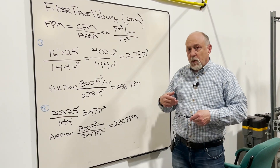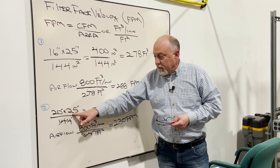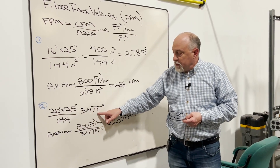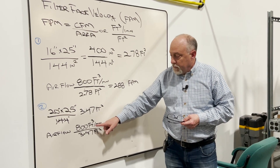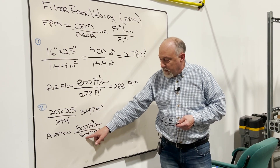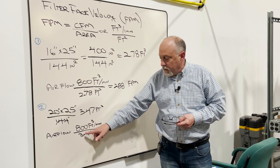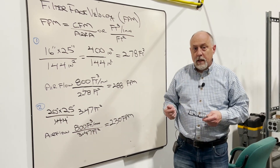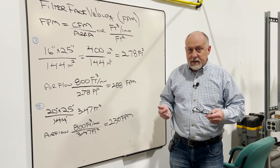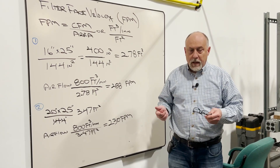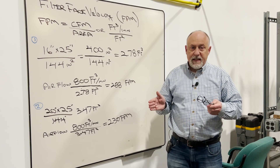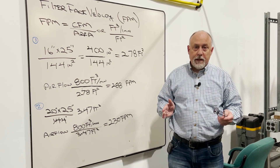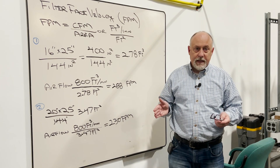What happens if we go with a larger filter? So if we take it up to a 20 by 25, divided by 144, that gives us 3.47 feet squared of area. Take the same 800 CFM divided by 3.47 — that gives us 230 feet per minute. So that slower air velocity is just going to give us better filtering. Now I said between 250 and 500 is ideal. If you go lower than that, it's really not going to hurt anything — it's just probably a little more filter media than you might need.